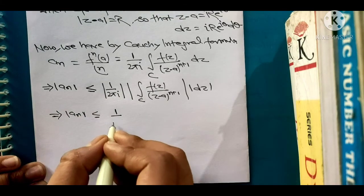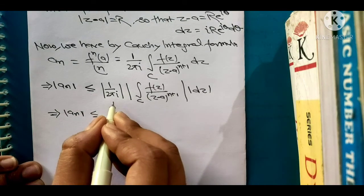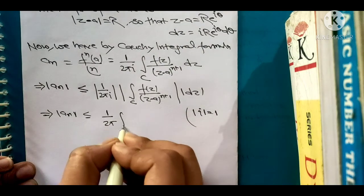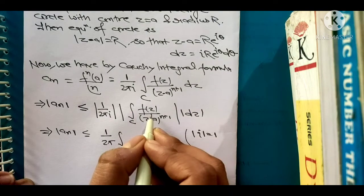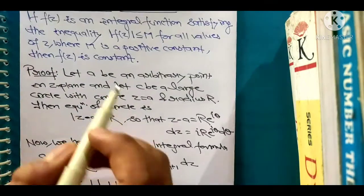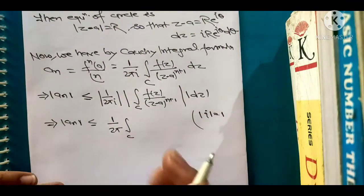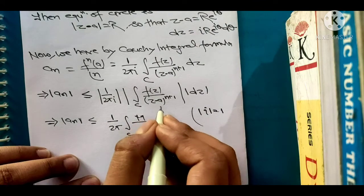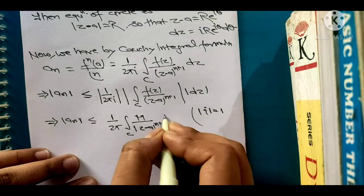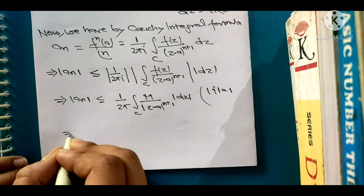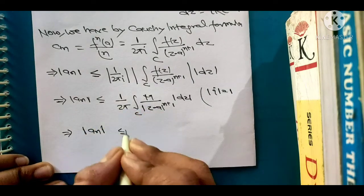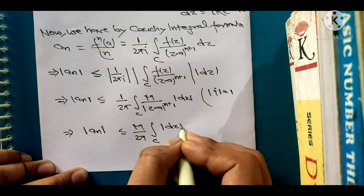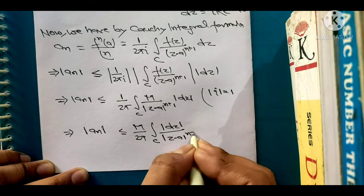One by one this will become 1 upon 2 pi because modulus of i equals 1, so this will become 1 upon 2 pi integral over C. Mod of f(z) is less than capital M by Cauchy inequality. So we can write capital M over modulus of z minus a to the power n plus 1 times mod of dz. Now modulus of a_n less than equals M over 2 pi integral over C of modulus of dz upon modulus of z minus a to the power n plus 1.